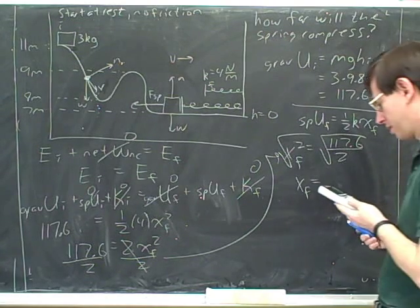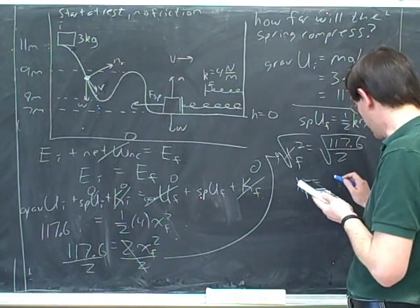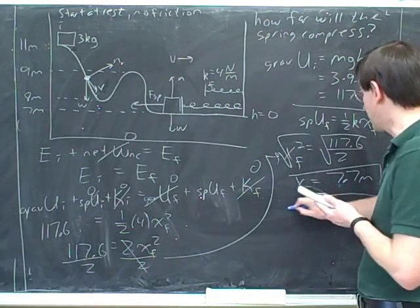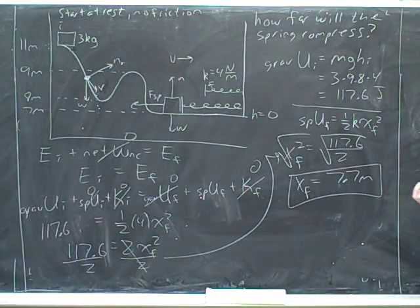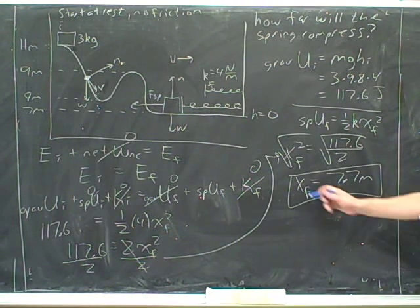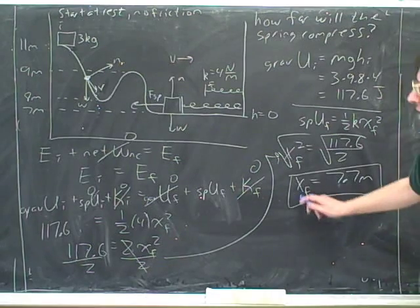What did you get? 7.66 meters. Okay. So I'll round that to 7.7. What's the answer to the question, then? How far the spring will compress? Yeah. What is the answer? 7.7. Yeah. This is the answer. This tells us how far the spring is going to compress.